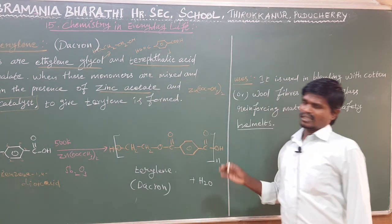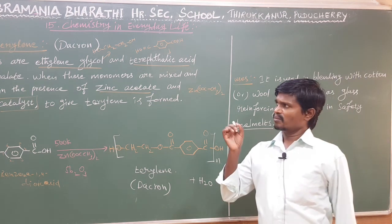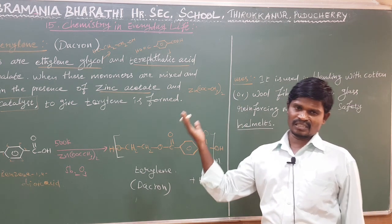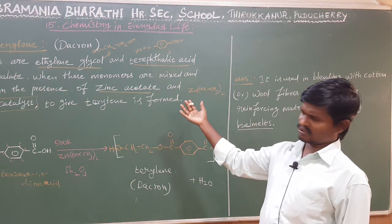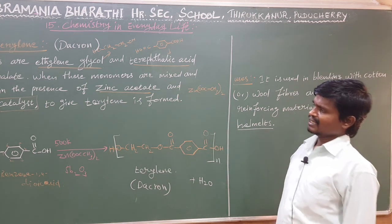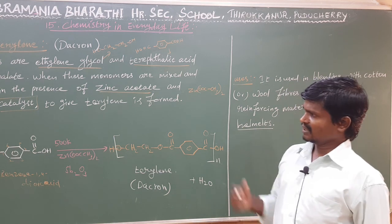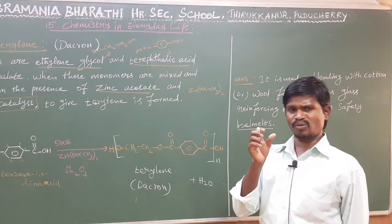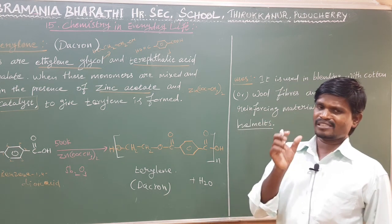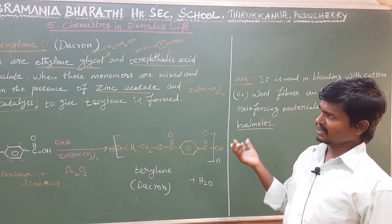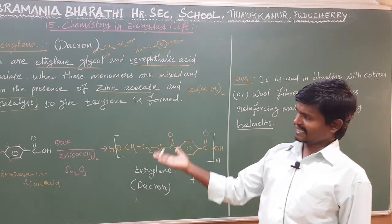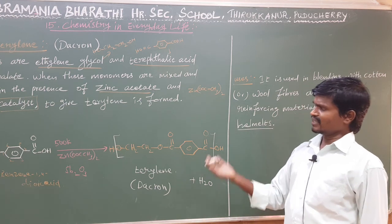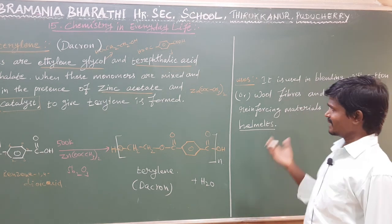Dear students, in this video we talked about the preparation of Terylene. Terylene is also called Dacron. The monomers are ethylene glycol and terephthalic acid. This is a condensation reaction, and each monomer must have at least two functional groups. Ethylene glycol has two OH groups and terephthalic acid has two carboxylic acid groups. With heat and catalyst, the product Terylene is formed.